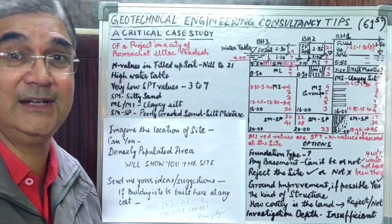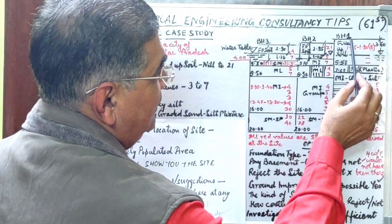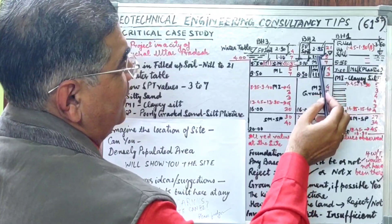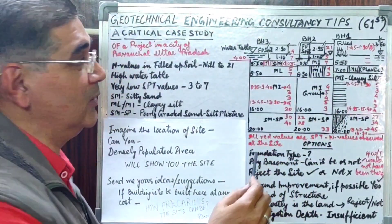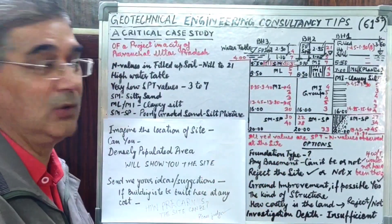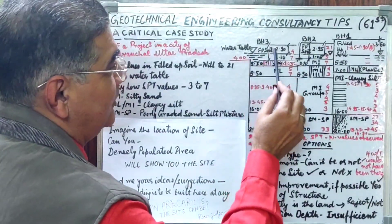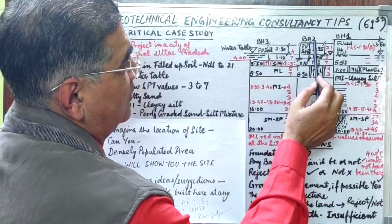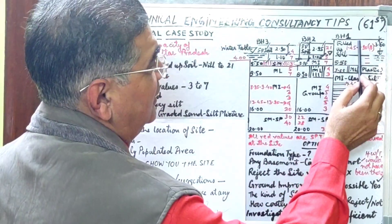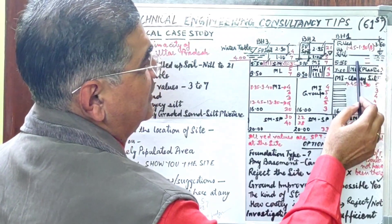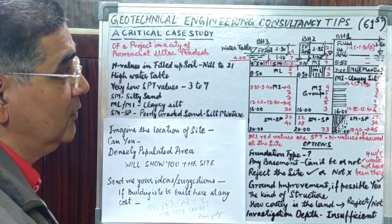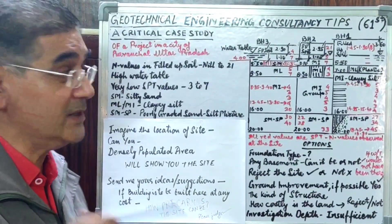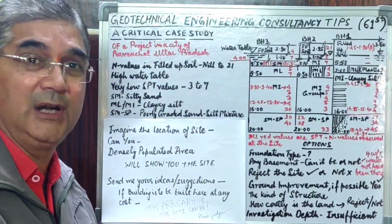The water table in borehole 1 was encountered at 3.60 meters depth below ground level, in borehole 2 at 2.95 meters below ground level, and in borehole 3 at 2.90 meters below ground level. Filled-up soil was found from ground level to 4 meters in boreholes 1 and 2, and from the top of borehole 3 to 5.50 meters below ground level. We decided to measure SPT N-values in the filled-up soil as well.